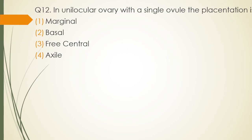Question 12. In unilocular ovary with single ovule, the placentation is — marginal, basal, parietal, or axile? The correct answer is option 2 — basal placentation.